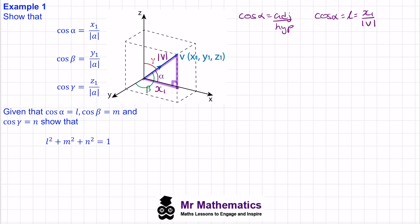Now we can look at cos beta. Cos beta will be the adjacent side, which in this case is along the y-axis. The right angle will be this line here, and the hypotenuse will again be the magnitude of that vector. So cos beta will be the adjacent y1 over the magnitude of the vector.